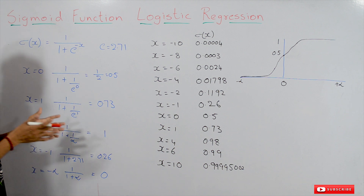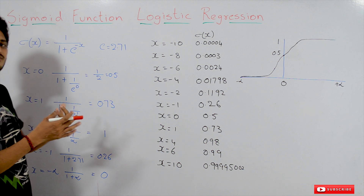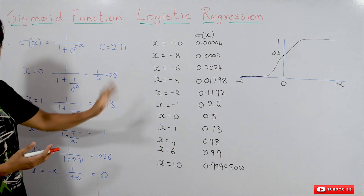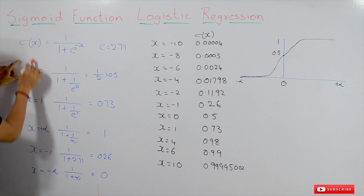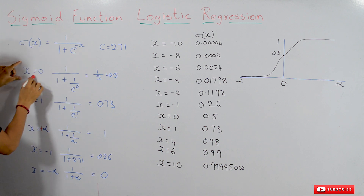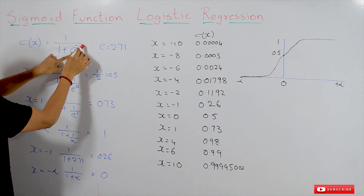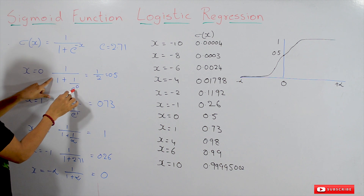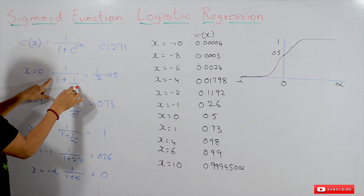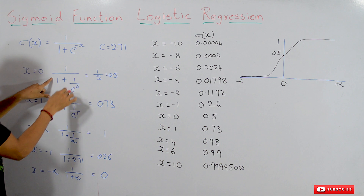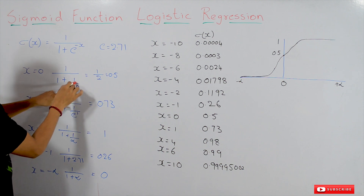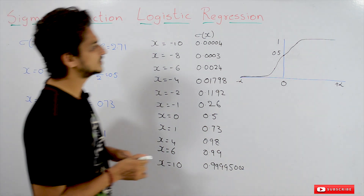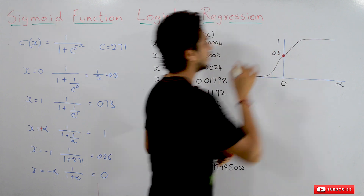Now let's understand how the sigmoid function behaves at different values, so that we get a good idea about what it is doing. At x equals 0, substituting into the equation: 1 divided by 1 plus e to the power minus x can be written as 1 divided by 1 plus 1 over e to the power x, placing x as 0. e to the power 0 equals 1, so 1 plus 1 equals 2, and 1 divided by 2 equals 0.5. So at x equals 0, we have a value of 0.5.